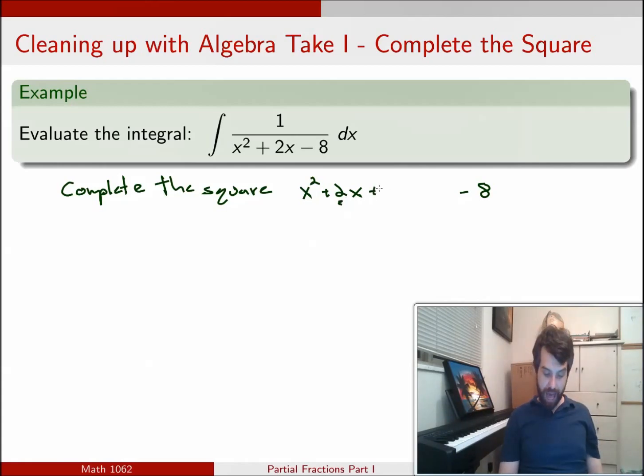I'm going to be adding that result and subtracting off that result. The reason that I can do this is what I have over here is something that I can neatly factor. I can say that this is going to be x plus 1 all squared minus 9.